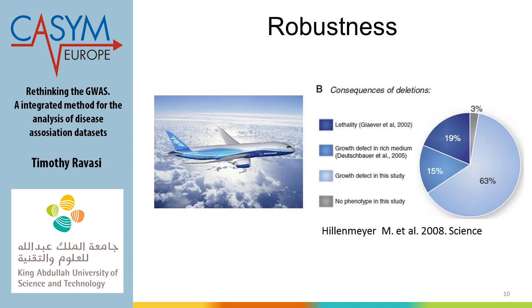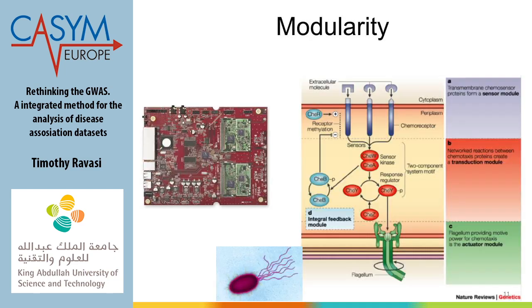That is robustness. I'll explain the other example with SNPs in more complex genomes. Modularity is the easy part to understand.